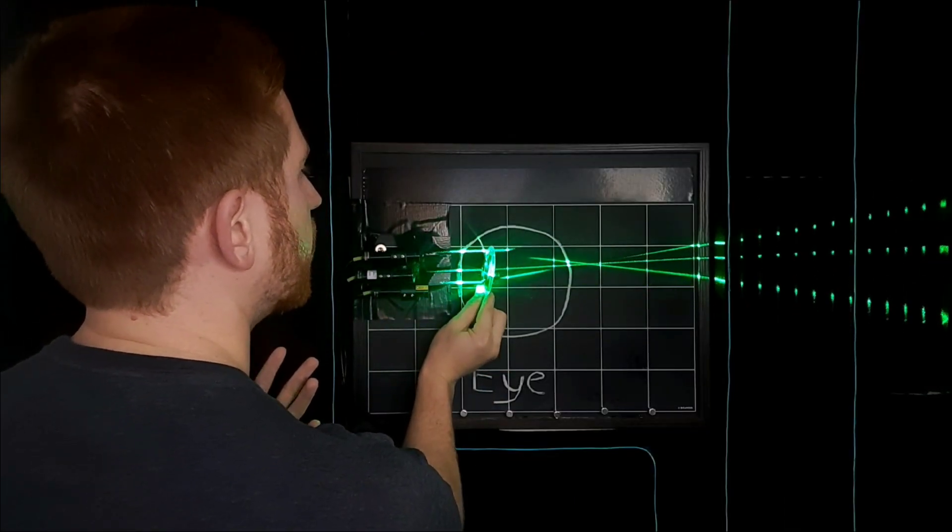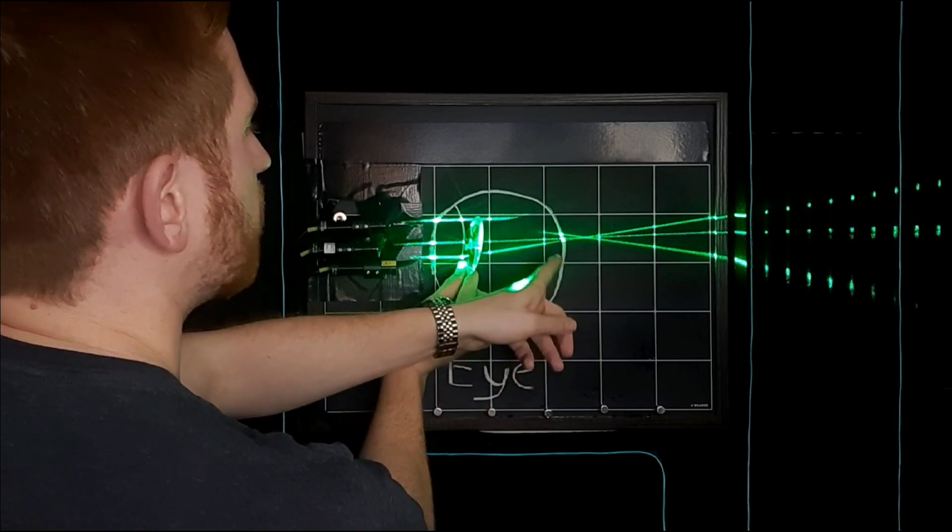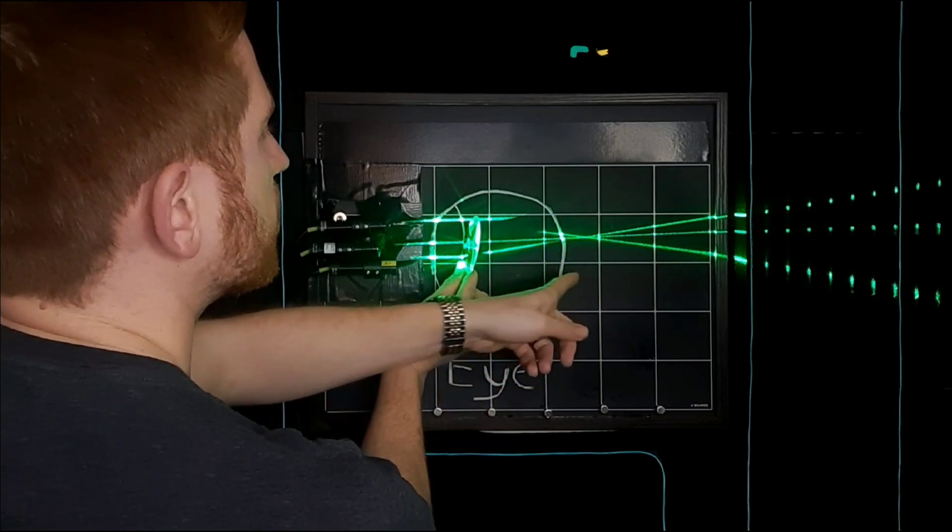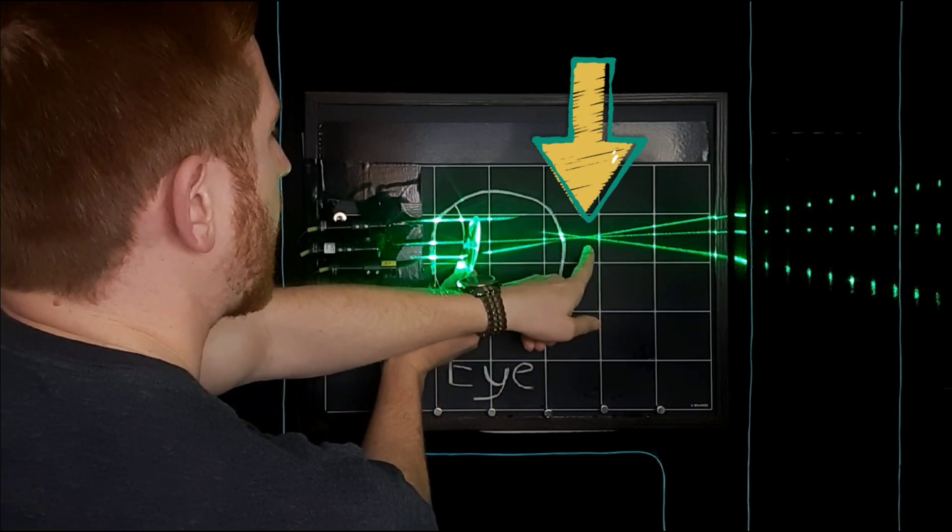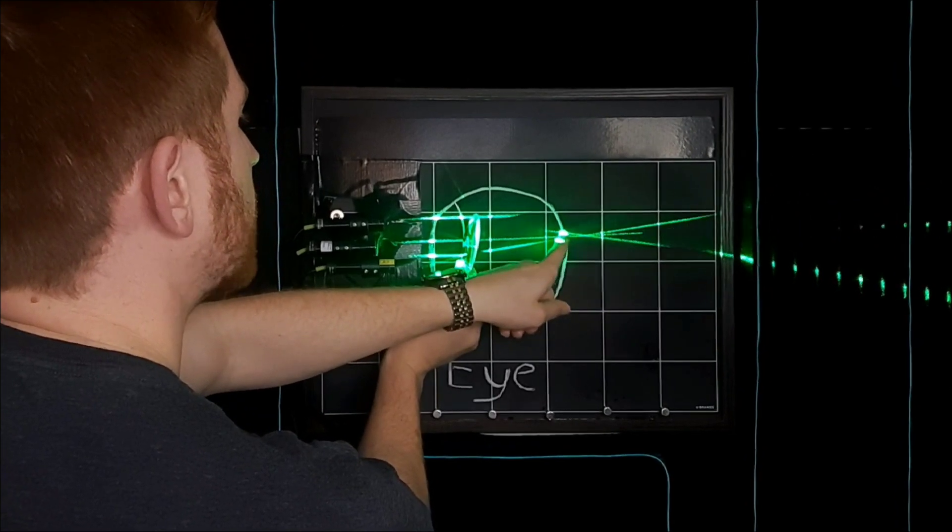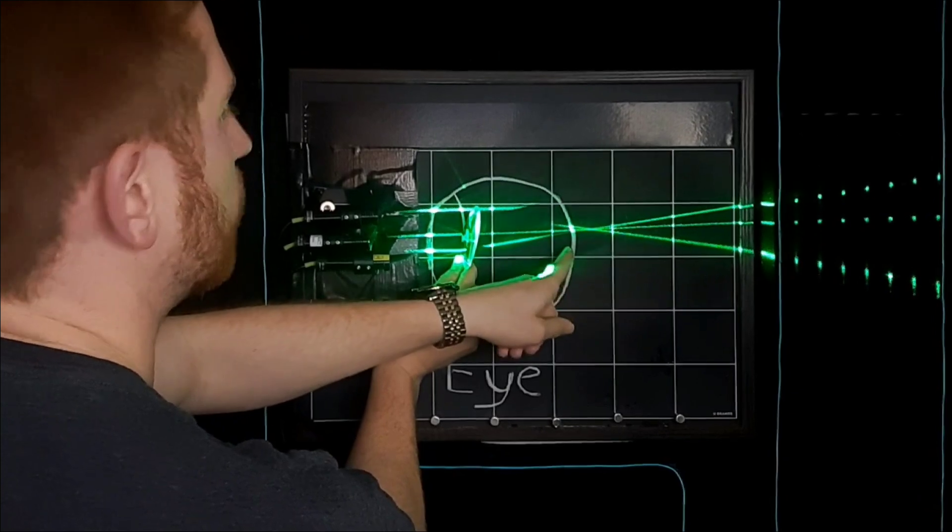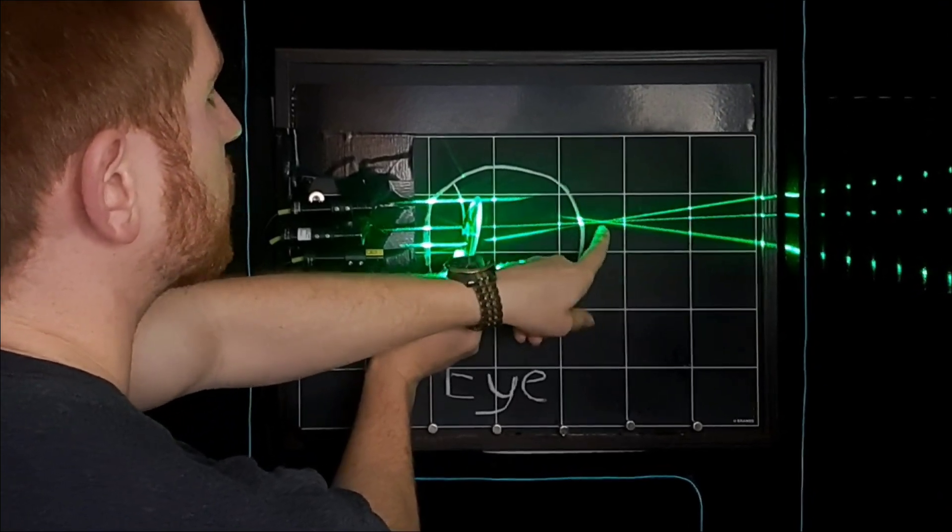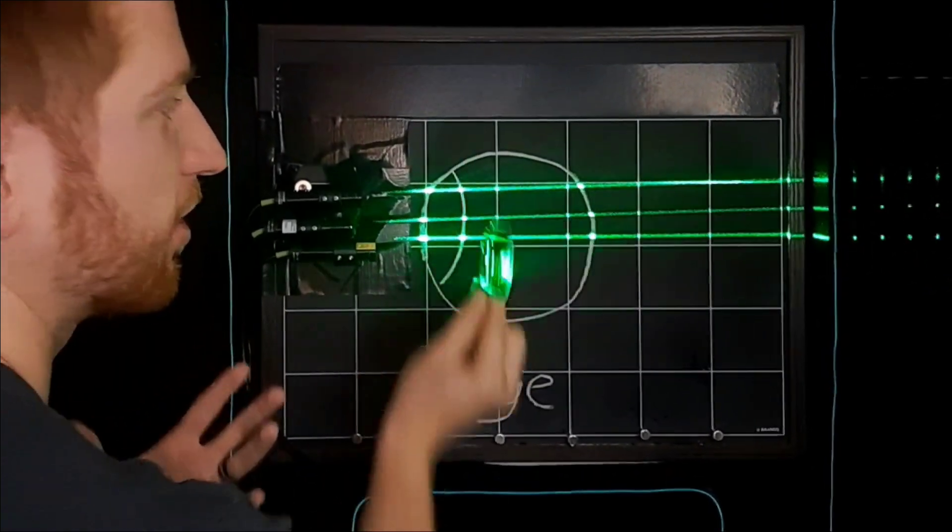Same thing if you're farsighted. Here, your eye is not bending the light sharply enough, so it's trying to focus the light past your retina. But it hits your retina before that, so the light there is again spread out and more blurry as opposed to being focused into a nice spot.